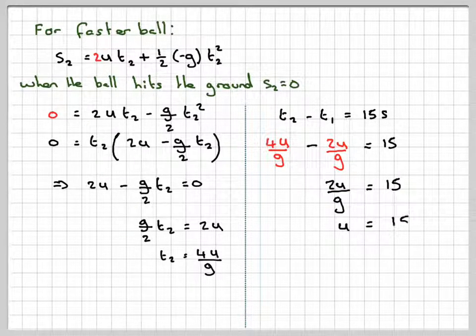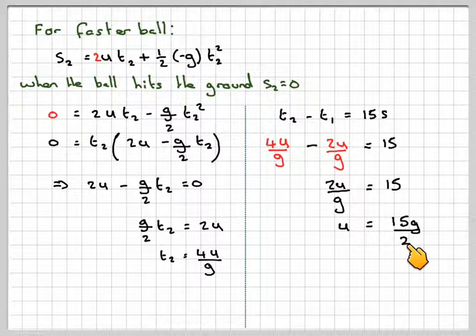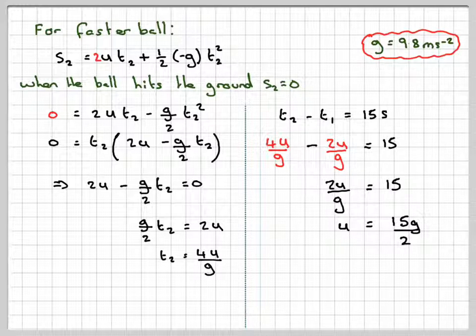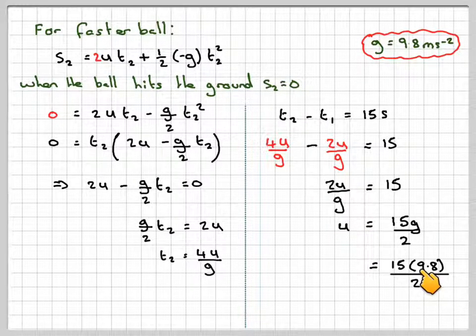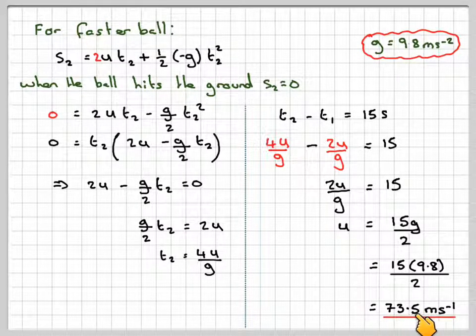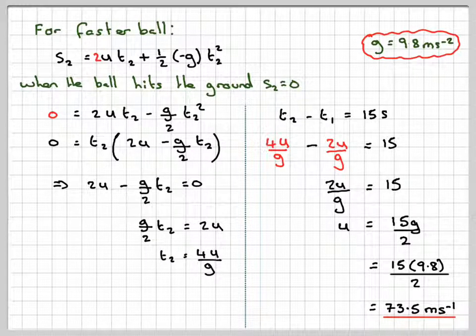Therefore, 4u minus 2u gives me 2u over g is equal to 15. Rearranging that, we're going to get that as being 15g over 2. Now we know that g was 9.8 meters per second squared. Substitute that in there, we're going to get 15 times 9.8 divided by 2, which is going to be 73.5 meters per second, will be the initial velocity of the slower ball.